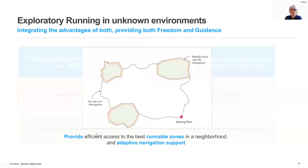Our objective with this work is to propose a new approach to exploratory running in unknown environments — one that integrates the advantages of both types of approaches discussed before, namely providing freedom to explore but with sufficient guidance to avoid getting lost. Therefore, we propose partially specified routes providing runners with access to the best runnable zones in a neighborhood, linked together through specified connecting paths.